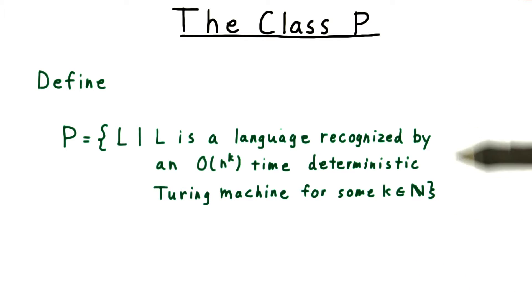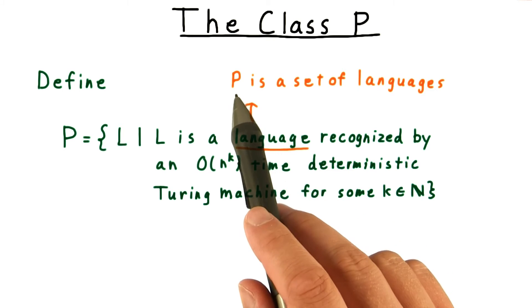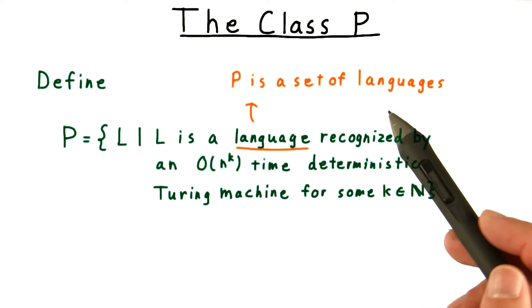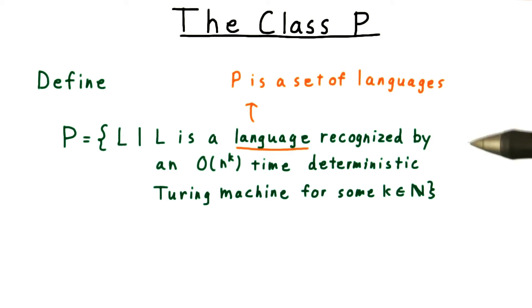There are several important things to note about this definition. First, P is a set of languages. Intuitively, we talk about P as a set of problems, but to be rigorous, we have to ultimately define it in terms of languages.